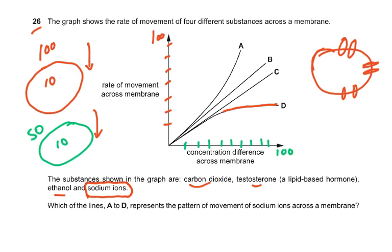The concentration difference across the membrane is increasing, and also the rate of movement is increasing in this direction — this is what you are seeing here. Please always understand the question before doing anything. Which of the lines A to D represents the pattern of movement of sodium ions across the membrane? It has to be D, because it has leveled off. The others haven't leveled off — they are all increasing. These are small uncharged molecules.